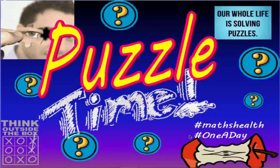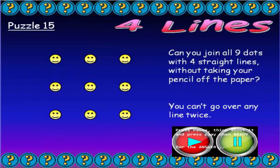A big welcome puzzle fans to another edition of Puzzle Time. It's all about thinking outside the box, especially for this puzzle. Here we go. This one's called Four Lines. We've got nine dots shown.